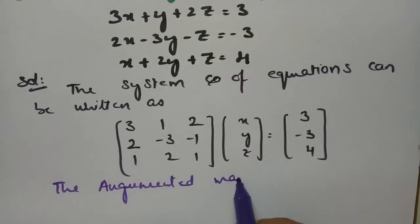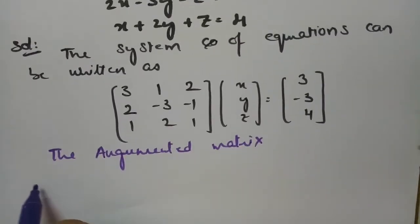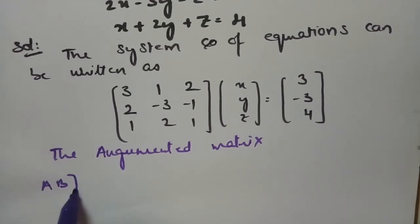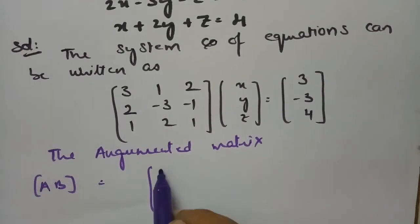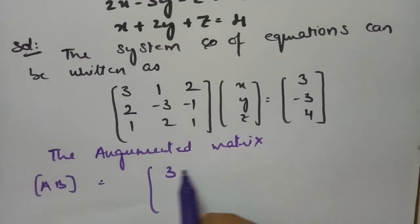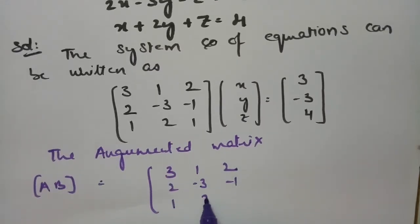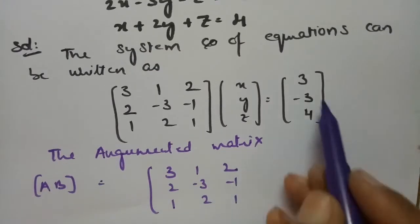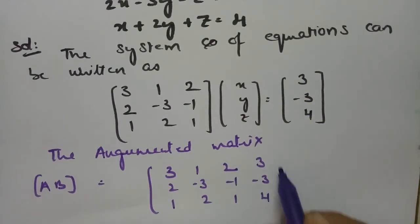The augmented matrix is nothing but [A|b]. So this will be: row 1 is 3, 1, 2; row 2 is 2, minus 3, minus 1; row 3 is 1, 2, 1; and we add the b column: 3, minus 3, and 4.